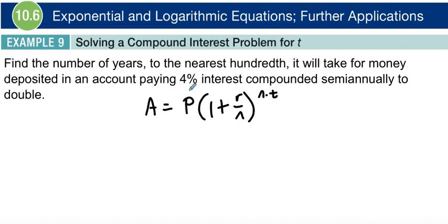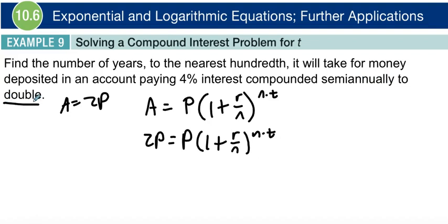So we want to know when is this principle going to double. Really, we're going to let A equal 2P, because we want to know when is P going to become 2P. So I'm going to say 2P is equal to this guy right here. Hopefully that makes sense, because that's what the problem is saying - when is it going to double. Now let's just plug in what we have and let's go from there.